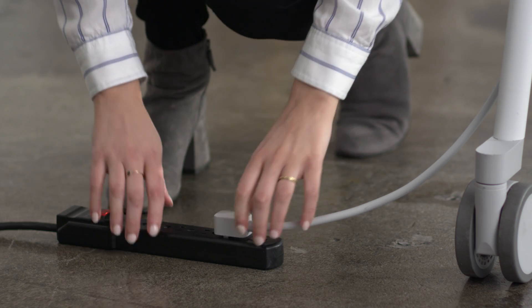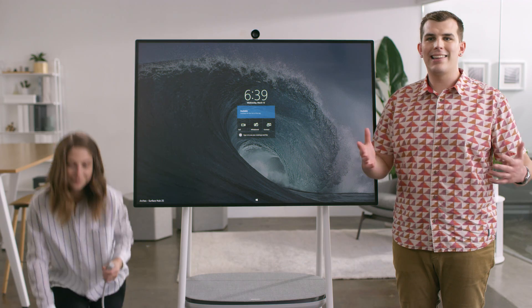That completes the setup of the Steelcase Roam mobile stand and APC charge mobile battery for Surface Hub 2. Now your team can unplug and collaborate anywhere without losing their momentum.